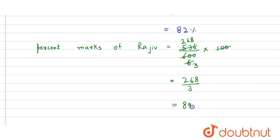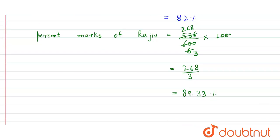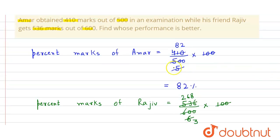When we divide it, we get 89.33 percent. So the percent marks of Rajiv is greater than the percent marks of Amar.